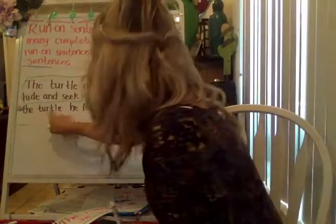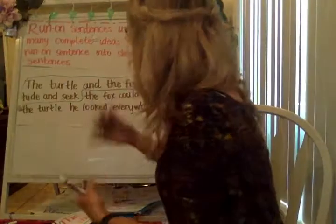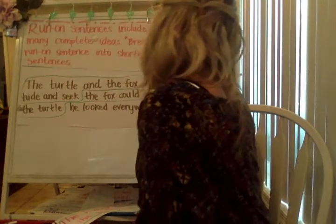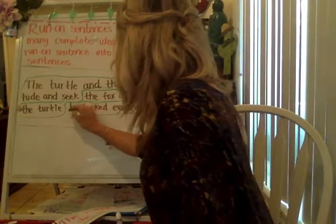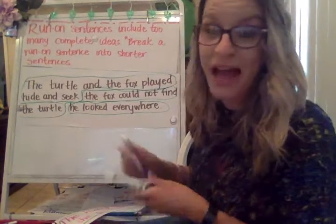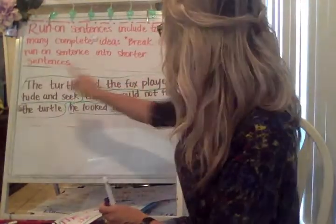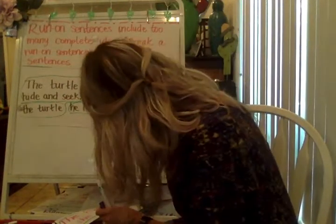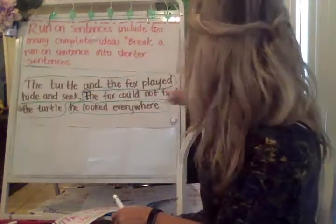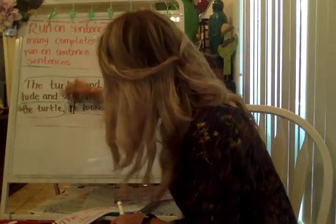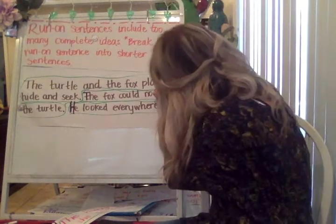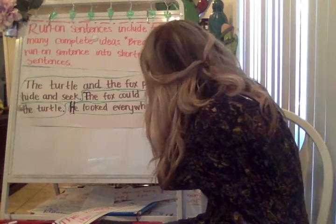Now we're going to go back and add capitals and punctuation to break them into shorter sentences. 'The turtle and the fox played hide and seek.' Period. Capital T for 'the.' 'The fox could not find the turtle.' Period. Next complete thought — capital H. 'He looked everywhere!' I'm actually going to turn this into an exclamation mark, because he can't find them — the turtle probably had a really good hiding spot.